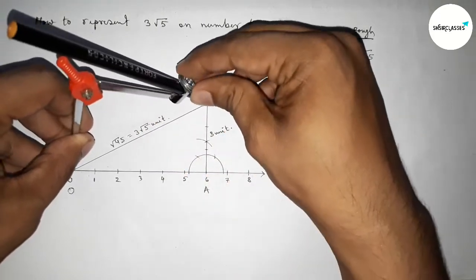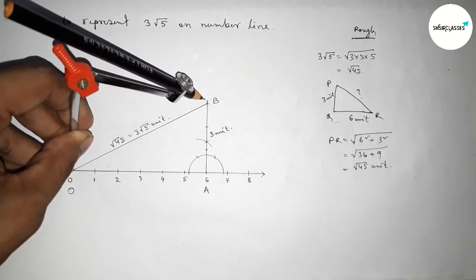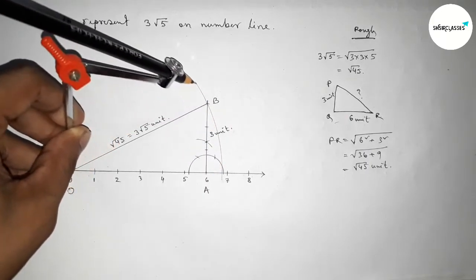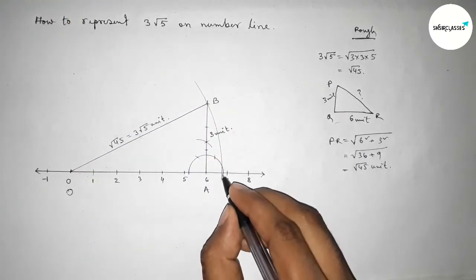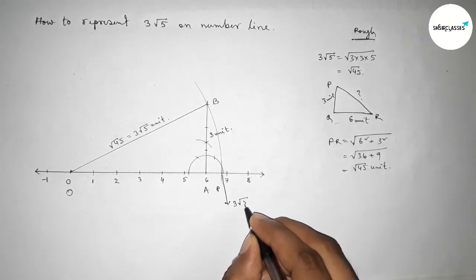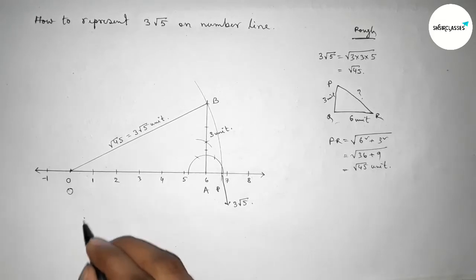Now taking the length OB equal to 3 root 5 unit by using compass and drawing here an arc which cuts the number line at a point here. So taking here point B, and this is 3 root 5 on the number line.